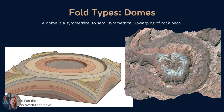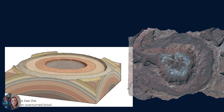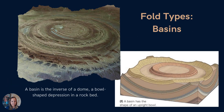Moving on to domes — these are symmetrical to semi-symmetrical upwarpings of rock beds. Rocks have been compressed and we see kind of a little bulge of material. This is kind of the early development of an anticline; if compression continues, we will see an anticline start to form, but right now it's just a dome feature. The opposite of that would be a basin — the inverse of a dome — which would be the start of the formation of a syncline. You can see in those layers how they're starting to form a little bit of a syncline, but right now it's just a basin type.